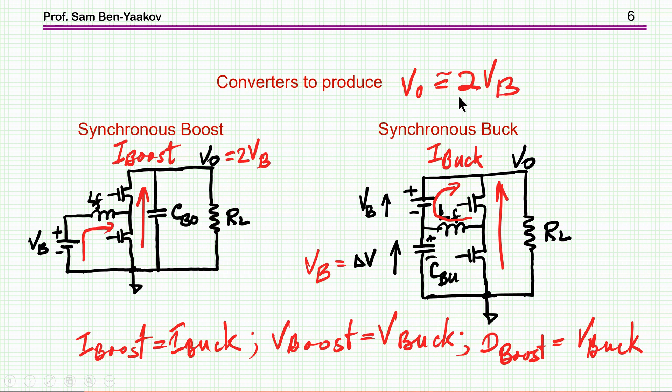So therefore for the same power level, this current and this current are the same. Now the transistors in the boost are connected across an output voltage, which is twice the battery voltage. And here these transistors are connected across the same voltage. So we have the same current through the inductor, the same voltage across this pair of transistors. And therefore the losses of the transistor will be the same, assuming the same RDS-on.